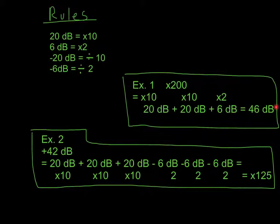We can also use it using division as well. If I have, for example, 42 dB, and this is going the other way, if I have a voltage that's 42 dB more, that's the same thing as 20 plus 20 plus 20, that gets me 60. Minus 6, minus 6, minus 6, that's minus 18, that will equal 42.